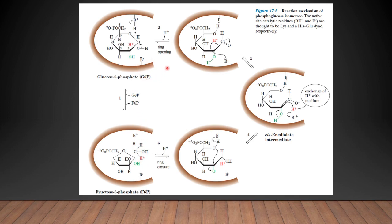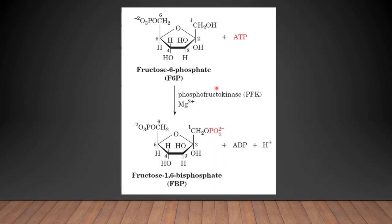Fructose-6-phosphate is converted into fructose-1,6-bisphosphate — phosphate molecules added at positions 1 and 6 — by utilization of ATP. ATP is converted into ADP and H⁺ ions with the help of enzyme phosphofructokinase in the presence of Mg²⁺ ions. This reaction is almost similar to the hexokinase reaction in step 1.